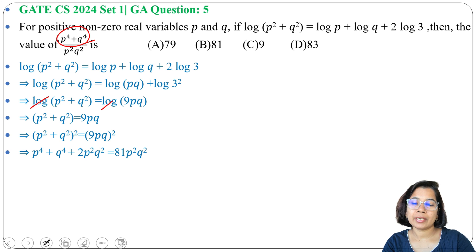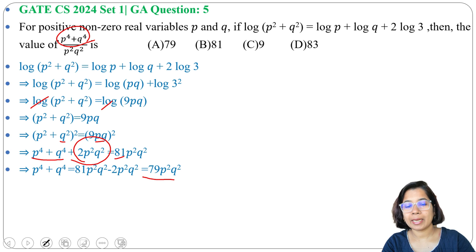Here we got p⁴ and q⁴. Now we can take this 2p²q² to right side. So we will subtract 2p²q² from 81p²q². We will get 79p²q². So p⁴ + q⁴ = 79p²q².